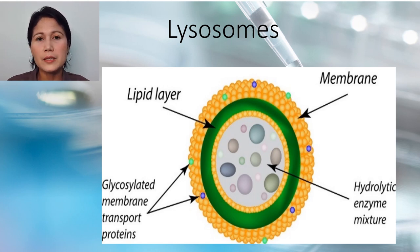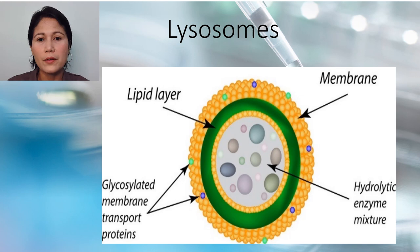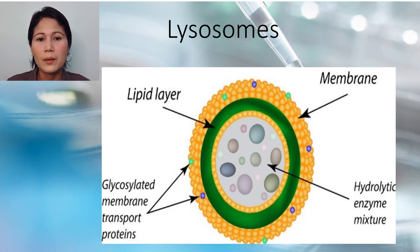Another function is fertilization. The acrosome of the sperm head is a giant lysosome that ruptures and releases enzymes on the surface of the egg. This provides the way for the sperm to enter into the egg by digesting the egg membrane.